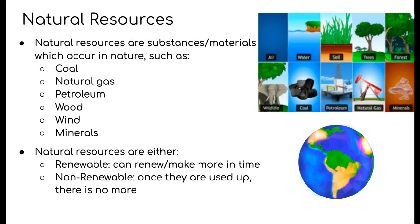Now let's talk about what natural resources are. Natural resources, unlike synthetic materials, are substances and materials which do occur in nature, meaning mankind has no involvement — they simply already exist within nature. These are things like coal, natural gas, petroleum, wood, wind, and lots of different minerals.